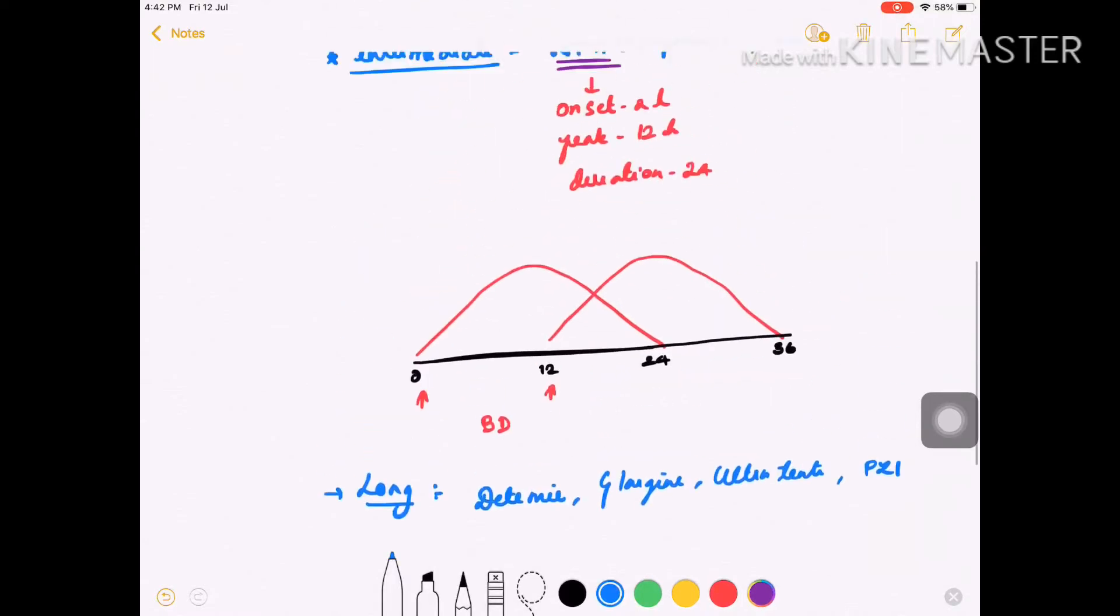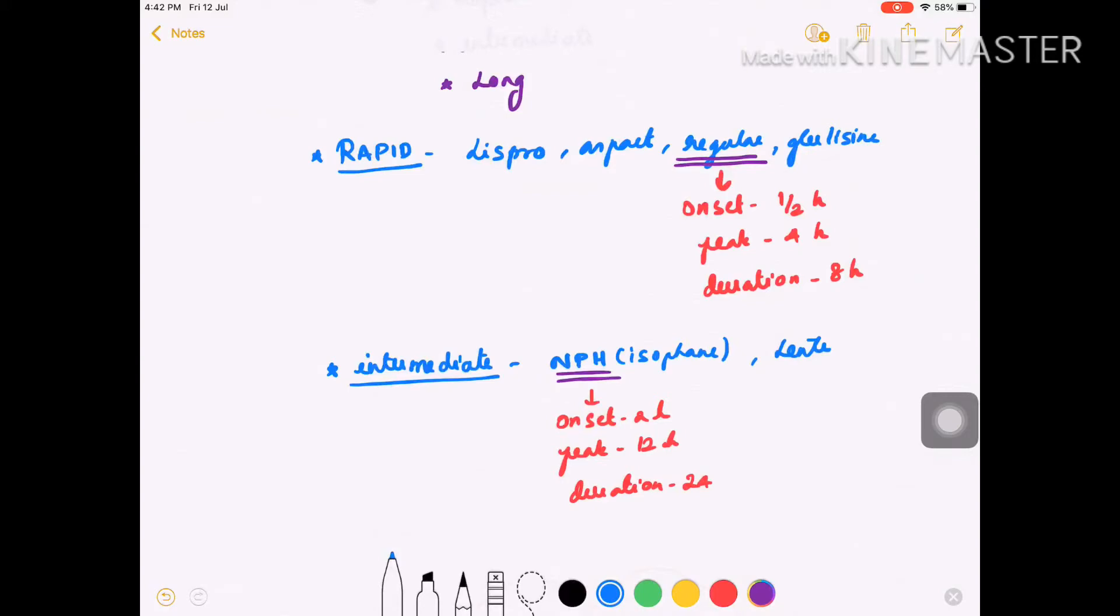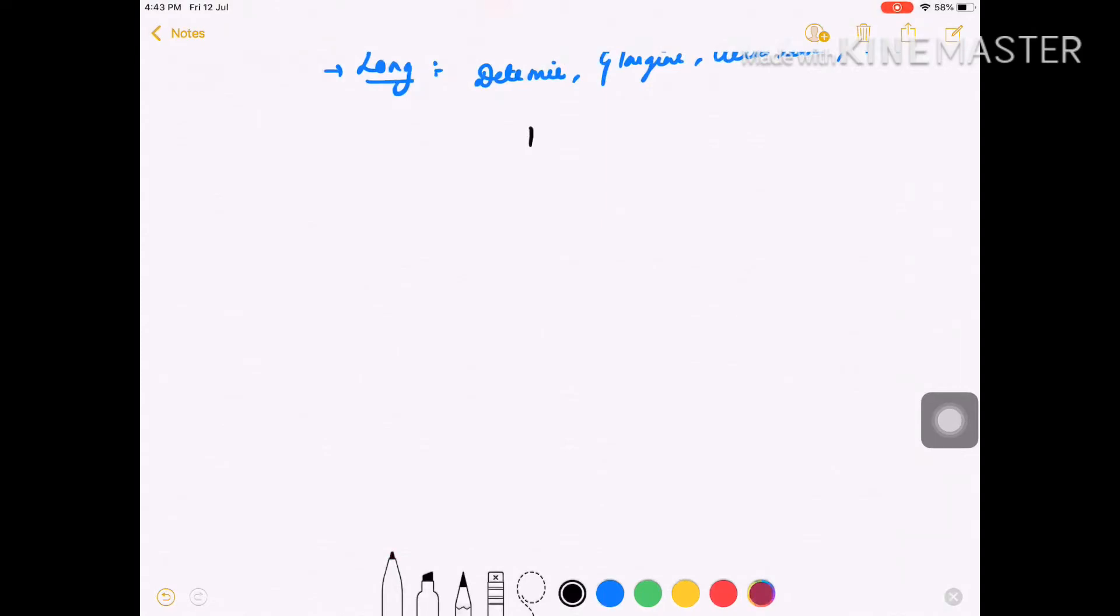Regular insulin and NPH are most commonly used in India, so I'm going to discuss how to dose using these two drugs to treat diabetic patients.